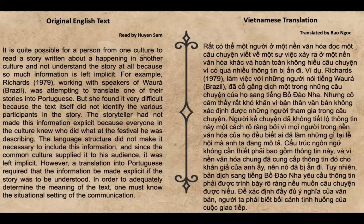Rất có thể một người ở một nền văn hóa đọc một câu chuyện viết về một sự việc xảy ra ở một nền văn hóa khác và hoàn toàn không hiểu câu chuyện vì có quá nhiều thông tin bị ẩn đi. Ví dụ, Richard làm việc với những người nổi tiếng Guara đã cố gắng dịch một trong những câu chuyện của họ sang tiếng Bồ Đào Nha, nhưng cảm thấy rất khó khăn vì bản thân văn bản không xác định được những người tham gia trong câu chuyện. Người kể chuyện đã không tiết lộ thông tin này một cách rõ ràng bởi vì mọi người trong nền văn hóa của họ đều biết ai đã làm những gì tại lễ hội mà anh ta đang mô tả. Cấu trúc ngôn ngữ không cần thiết phải bao gồm thông tin này, và vì nền văn hóa chung đã cung cấp thông tin đó cho khán giả nên nó đã bị ẩn đi. Tuy nhiên, bản dịch sang tiếng Bồ Đào Nha yêu cầu thông tin phải được trình bày rõ ràng nếu muốn câu chuyện được hiểu. Để xác định đầy đủ ý nghĩa của văn bản, người ta phải biết bối cảnh tình huống của cuộc giao tiếp.